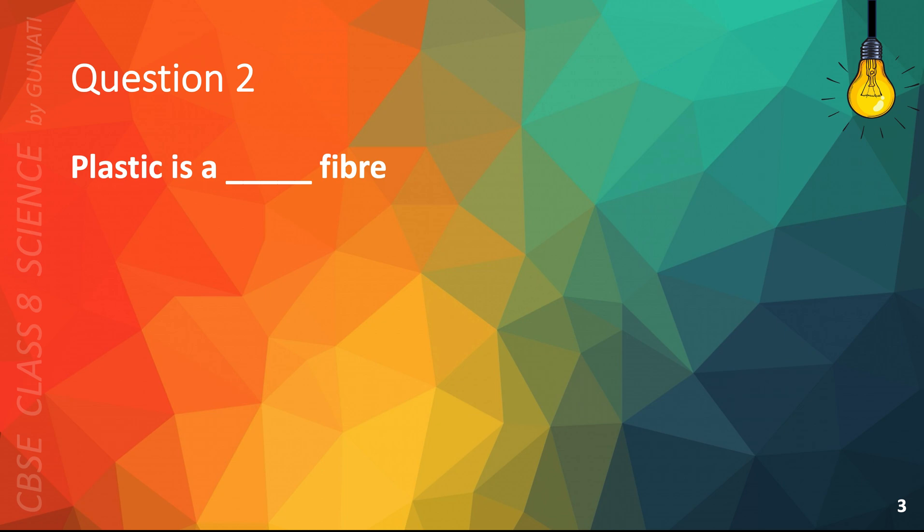Question 2. Plastic is a blank fiber. A. Natural. Or B. Synthetic. The correct answer is B. Synthetic.